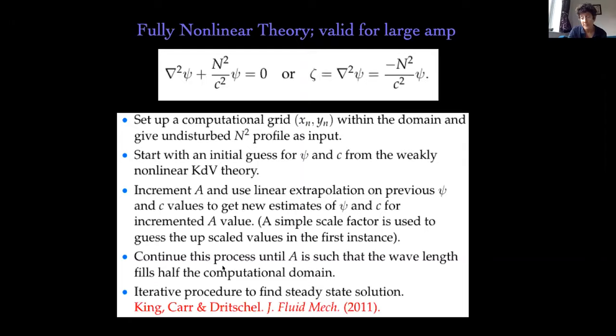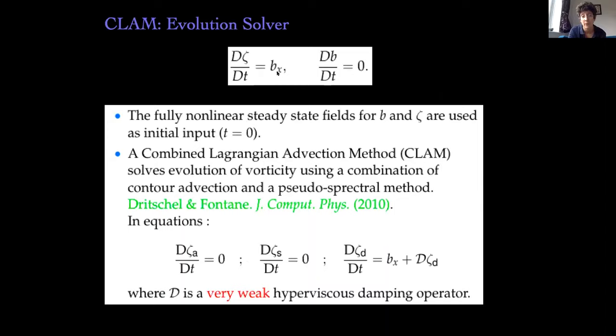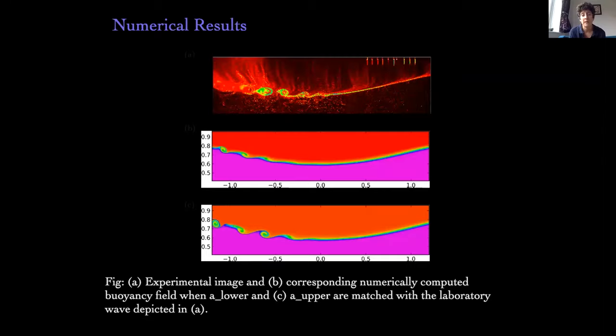All of this is time-independent. To see how these waves evolve, we need a so-called evolution solver — a time-dependent code where we put these fully nonlinear large amplitude waves in and let the code advance with time. Here's what we find: the top plot is an image from the lab and the bottom two are from the numerics. I just want to show you qualitatively that the numerics is doing a really good job of capturing the main dynamics seen in the laboratory. We also find excellent quantitative agreement — for example, the Thorpe scale measuring overturning in the billows was computed both numerically and in the lab with excellent agreement between the two.